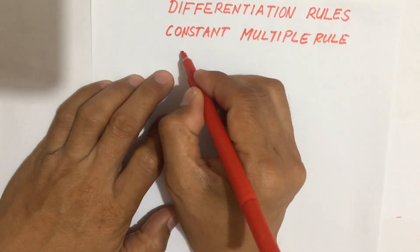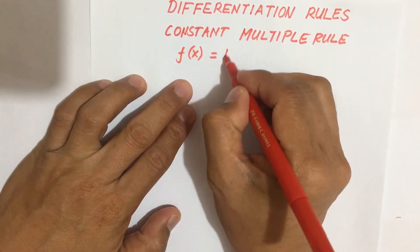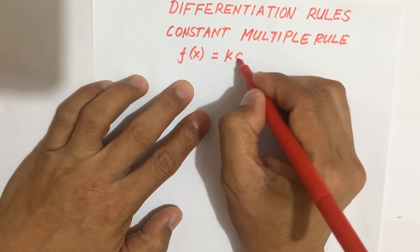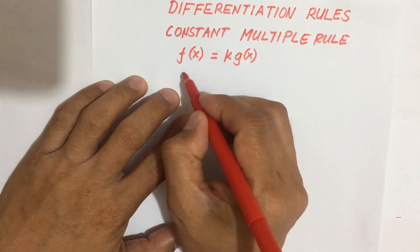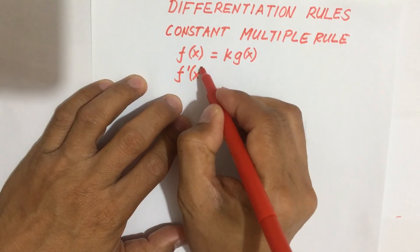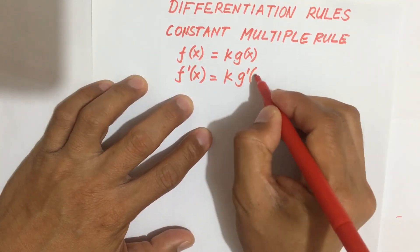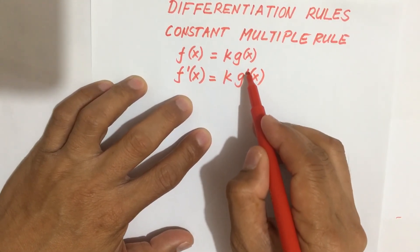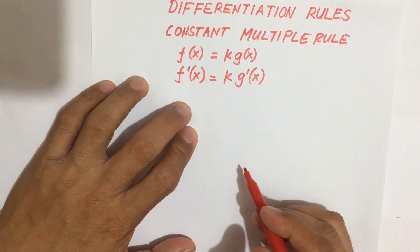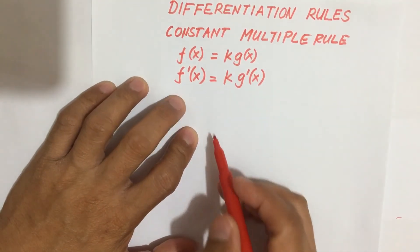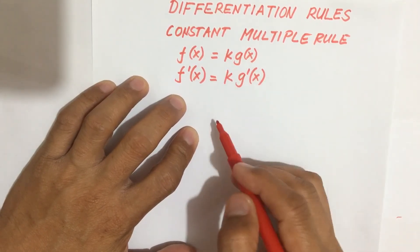We have a theorem: if you have a function f(x) equal to a constant k times a function of x, then to find the derivative, f'(x) is equal to the constant k times the derivative of the function. So when you find the derivative of a constant multiplied by a function of x, you just isolate the constant and then take the derivative of the function of x.